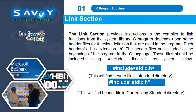The next one is the linking section. The link section provides instructions to the compiler to link functions from the system library. A C program depends upon some header files for function definitions used in the program. Each header file has the extension .h. Header files are included at the beginning of the program using the hash include directive, with either angle brackets or double quotations.